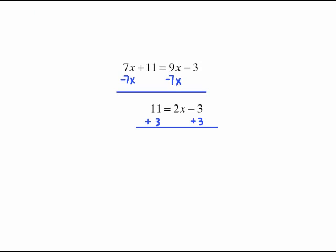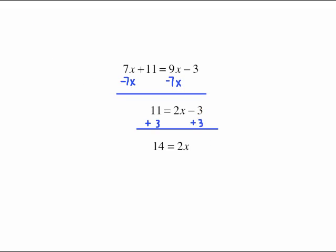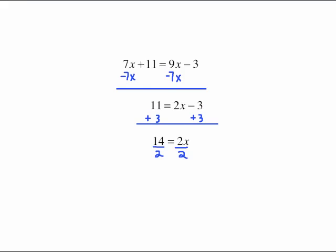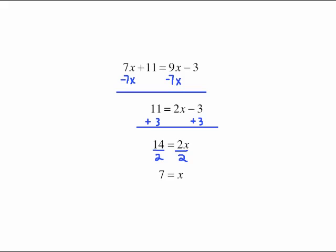Undo the minus 3 by adding 3 to both sides. Those cancel out and we'll have 2x equals 14. To undo 2 times x do the opposite which is divide by 2 which gives us x equals 7.